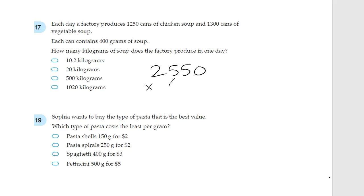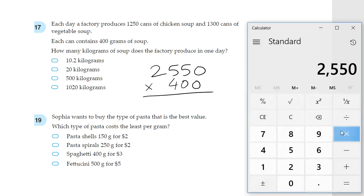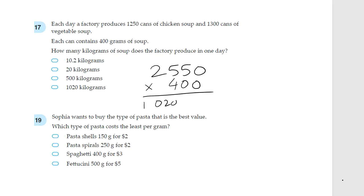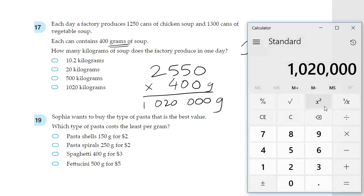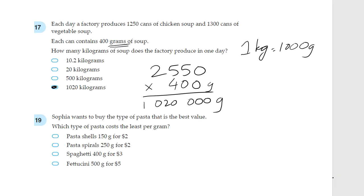So this plus 1,300 equals 2,550. So we need to multiply this by 400. And once again, since we're allowed to use the calculator, let's use that. Times 400 equals 1,020,000. And this is in grams, remember, because this was 400 grams. So to get from grams to kilograms, remember that in one kilogram, we have 1,000 grams. Therefore, to get from grams to kilograms, we need to divide this number by 1,000. Equals 1,020. So our answer will be 1,020 kilograms.